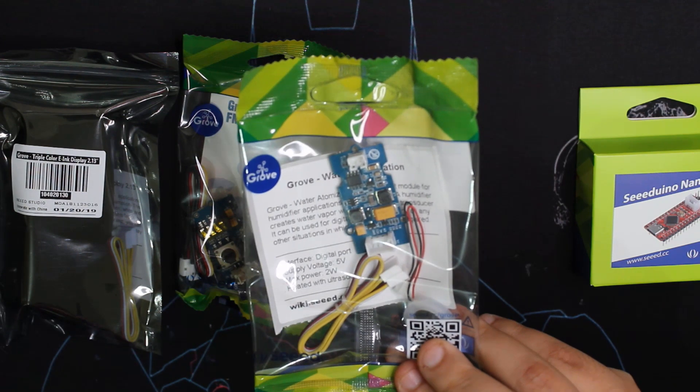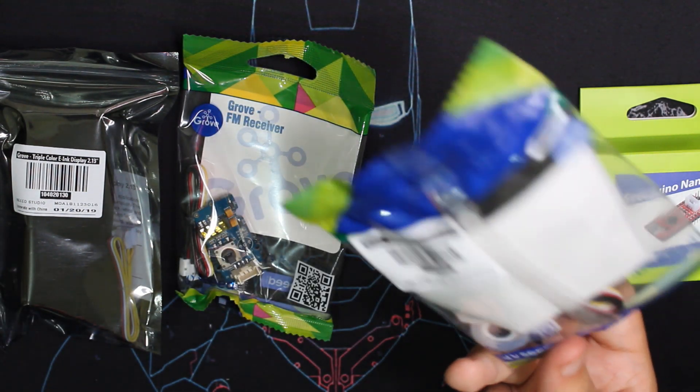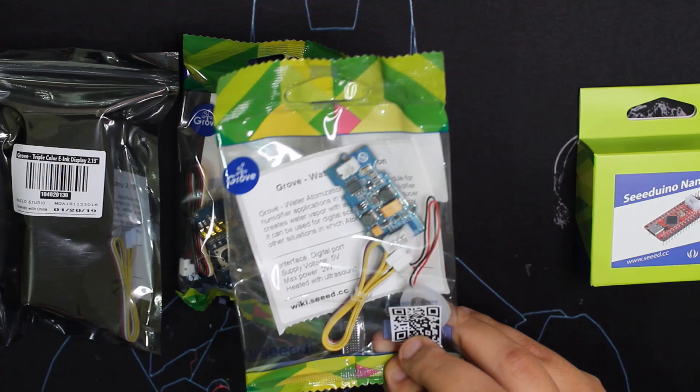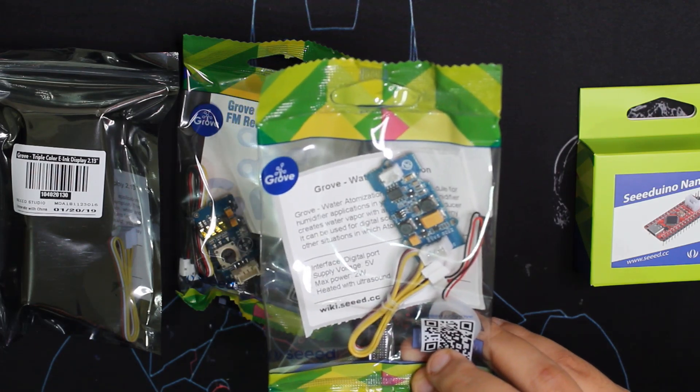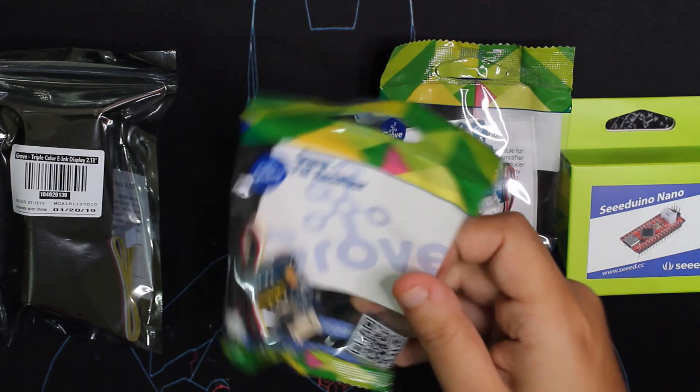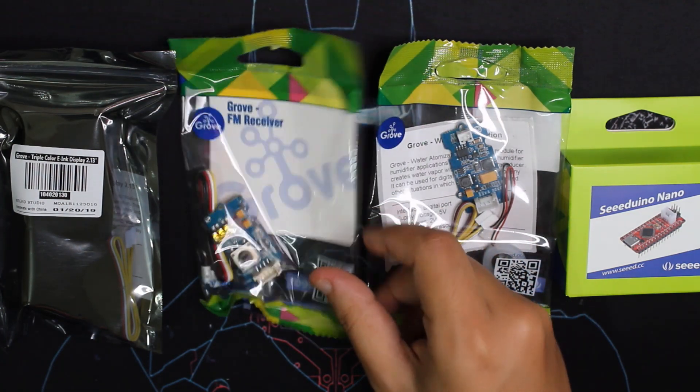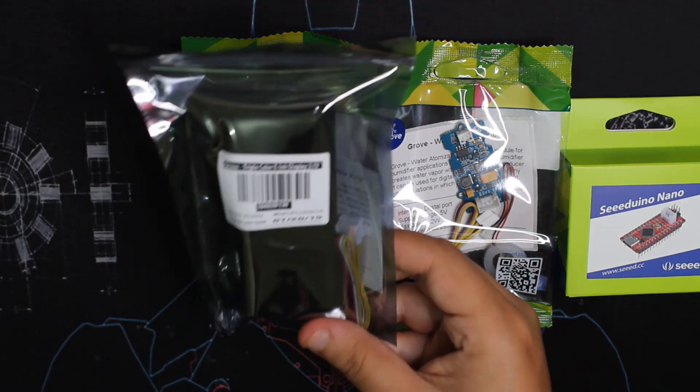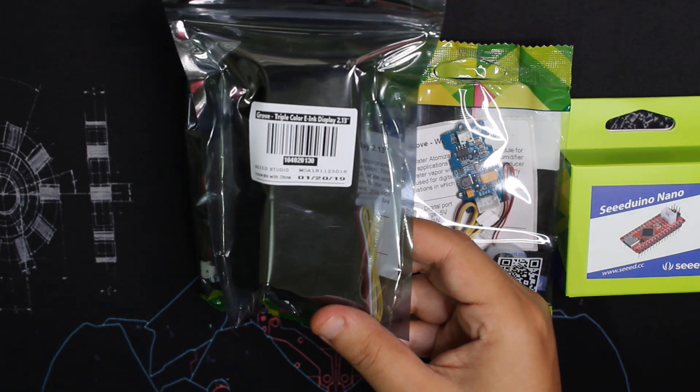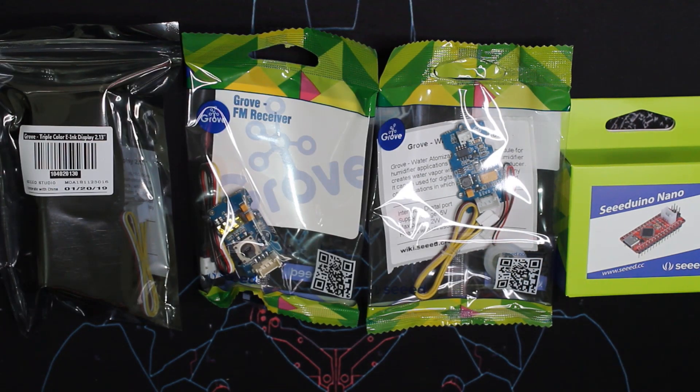It's a water atomization module that creates a mist from water. Here we have another Grove module—it's an FM receiver. And here we have a triple color e-ink display. I'm going to try to make videos about each of these modules.